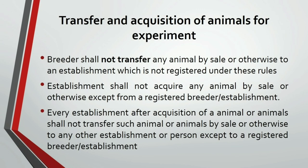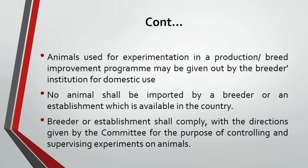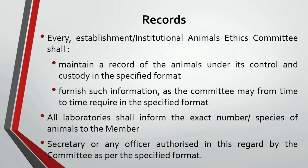Regarding transfer and acquisition of animals: one cannot transfer any animal to any breeder or establishment unless that breeder or establishment is registered. If any animal is already available in the country, one cannot import that kind of animal for the experiment. Breeders or establishments should follow all directions given by the committee. Every establishment, breeder, and committee should maintain records of experiments. If such records are asked for by any authorities, they must be shown in the specified format. All laboratories should inform the committee of the exact number of animals present and used in the experiments.